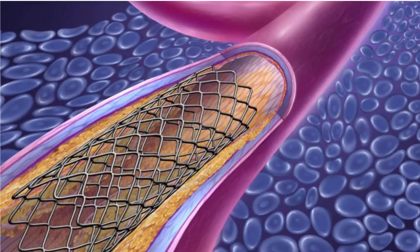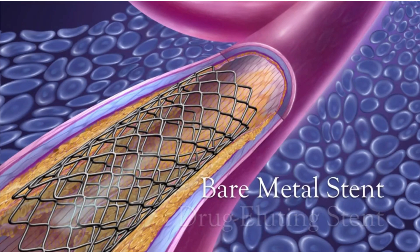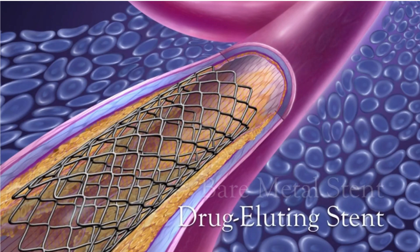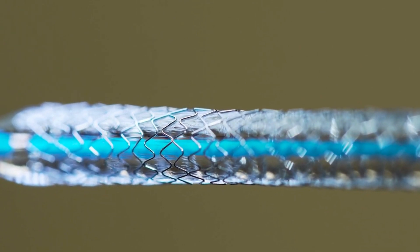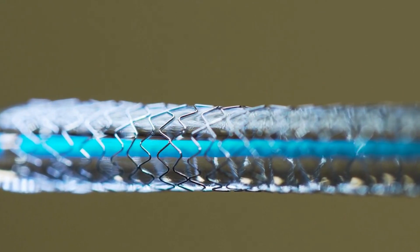Now, let's talk about the costs associated with heart stents. It's important to note that the cost can vary based on several factors, including the type of stent, the hospital, and the geographical location. Bare metal stents are generally less expensive than drug-eluting stents. Due to the added technology and medication, drug-eluting stents tend to be more expensive. We have provided the cost of stents in the description — just click the link to calculate the cost.